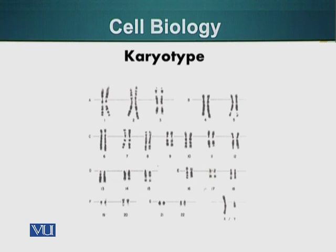Here on the screen you can see the karyotype of a male person. A karyotype is basically an arrangement of chromosomes in descending order by size of stained chromosomes. You can see that there are two chromosome 1s, two chromosome 2s, two chromosome 3s, and so on. One chromosome 1 came from the father, the other came from the mother.